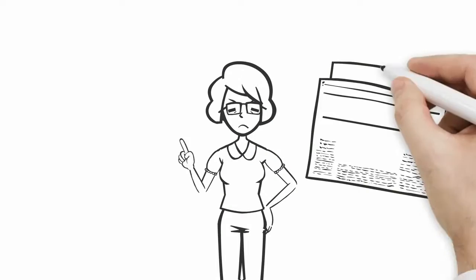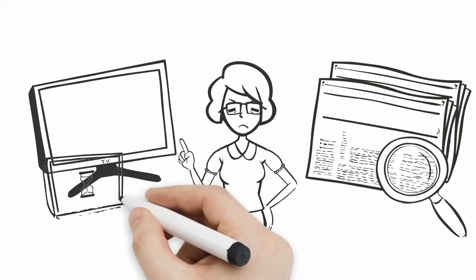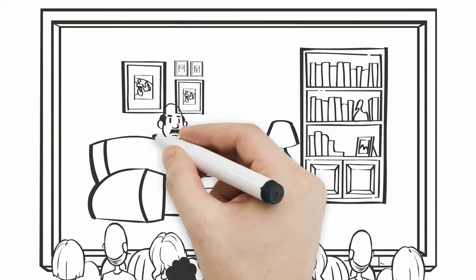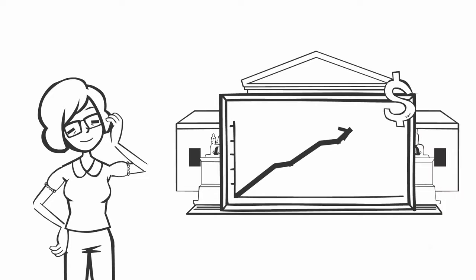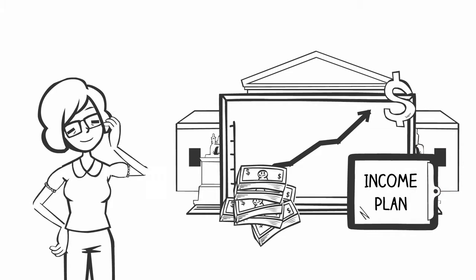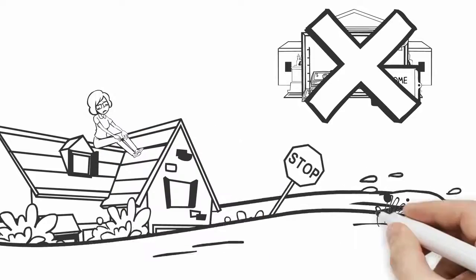We certainly can't believe everything we read or hear, but the one thing we all can agree on is that we're living longer, and if you don't have a rock-solid retirement income plan in place to go the distance, you might find yourself in deep water.